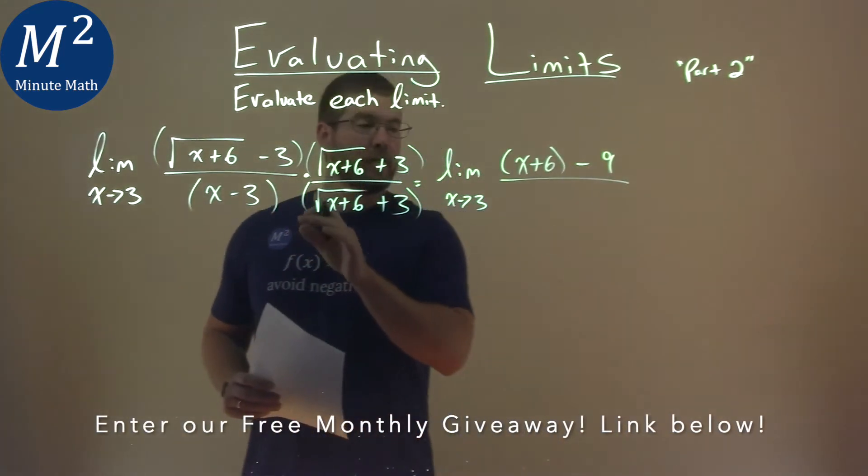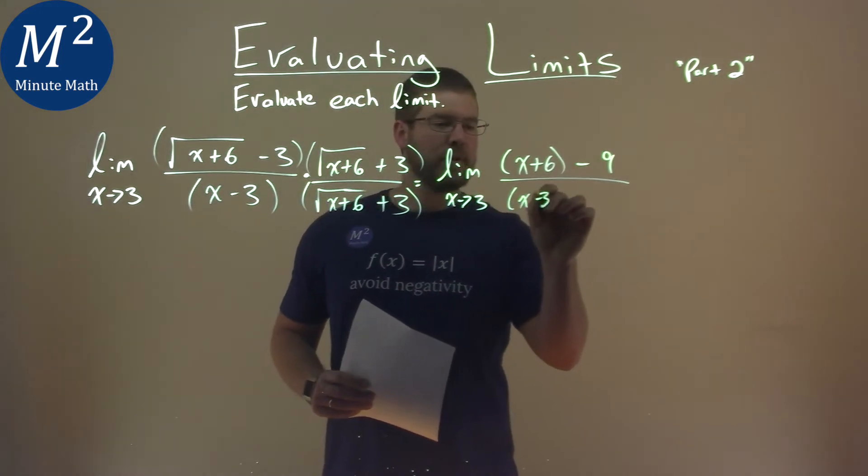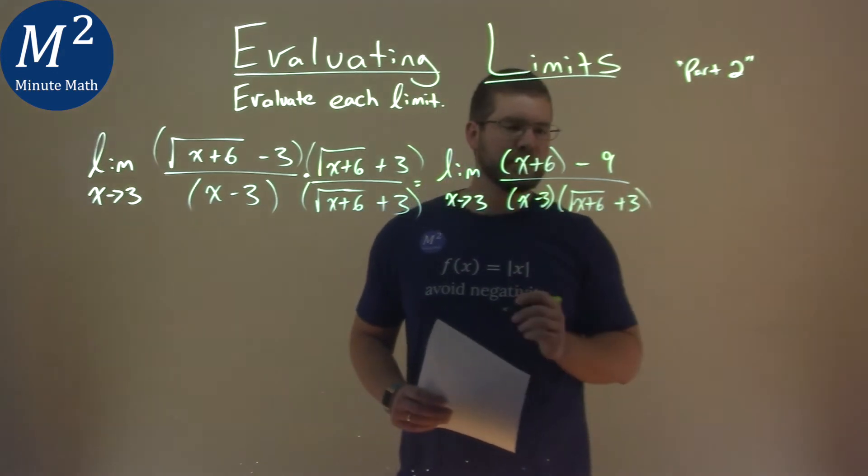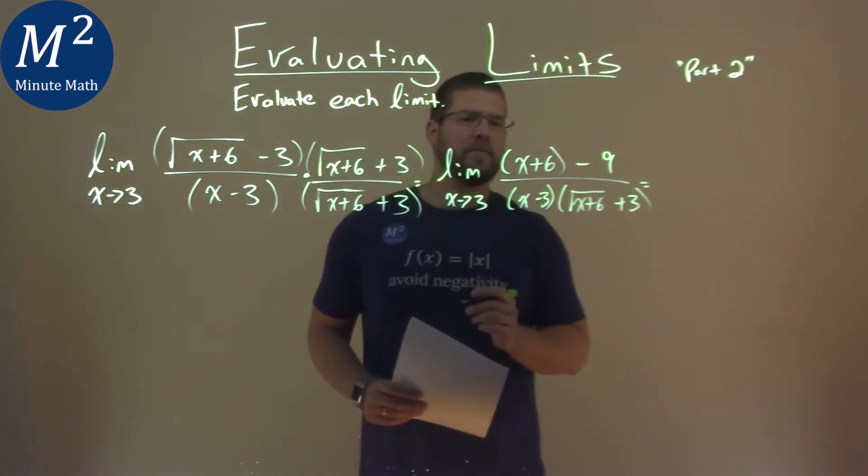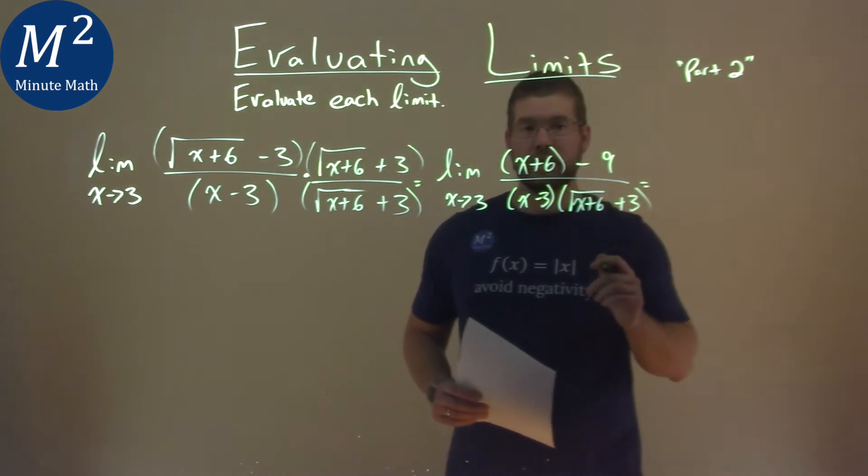All of that is over, I'm going to keep the denominator as is, x minus 3 times the square root of x plus 6 plus 3. Now this numerator we can simplify a little more, right? 6 minus 9 is minus 3.